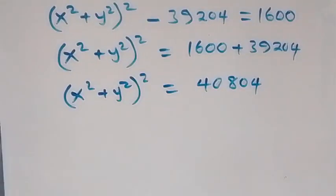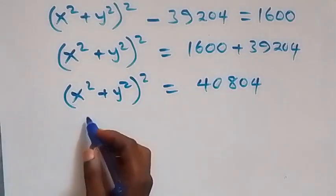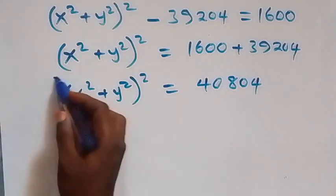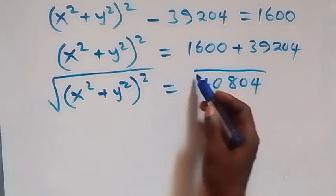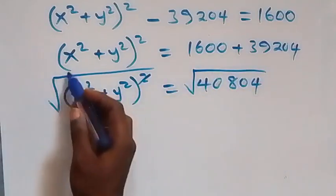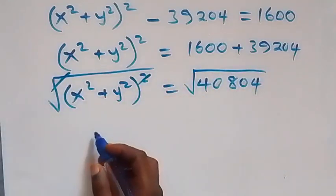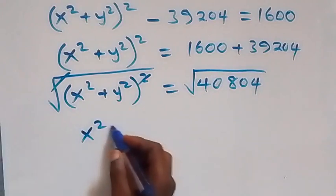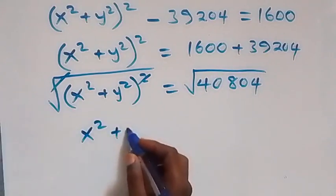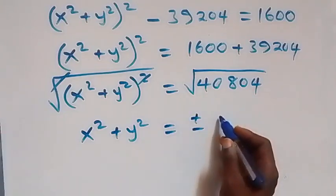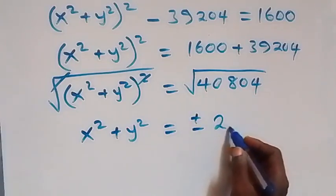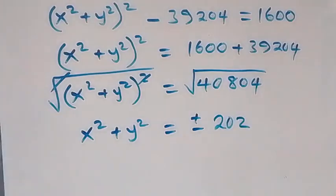Taking the square root on both sides, the square cancels the square root and we have x squared plus y squared equals plus or minus 202.